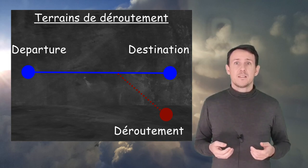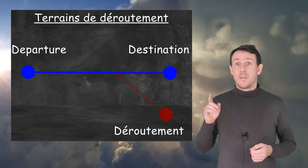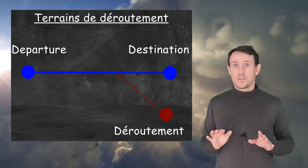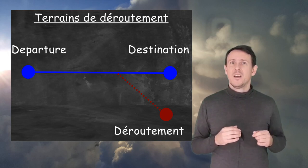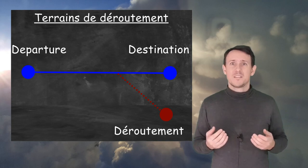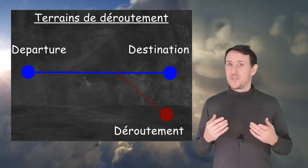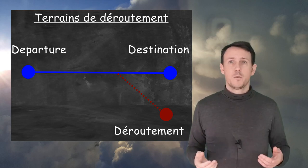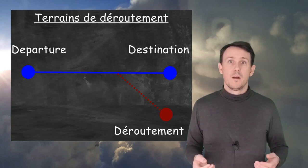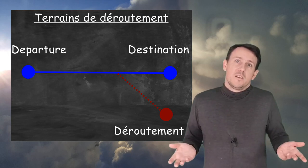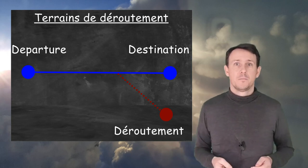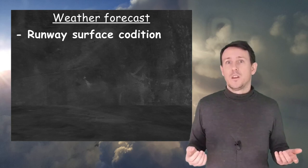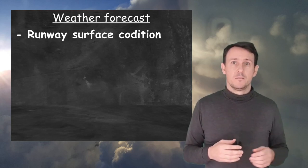If the weather forecast on the alternate airfield is worse than the one at the destination, it would be wise to select another alternate airfield. To make it simple, this would be like having a punctured spare wheel — rather useless. The weather will also affect the runway in use and the surface condition.